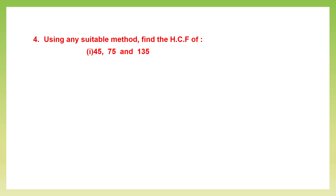Question 4: using any suitable method, find the HCF. We have learned 3 methods. The first one is the common factor method, where you find all the factors. The second is the prime factor method. And the third one is the long division method. You can use any one method. Generally, when you have a bigger number — especially here you have 135 — it's always easier to use the long division method.